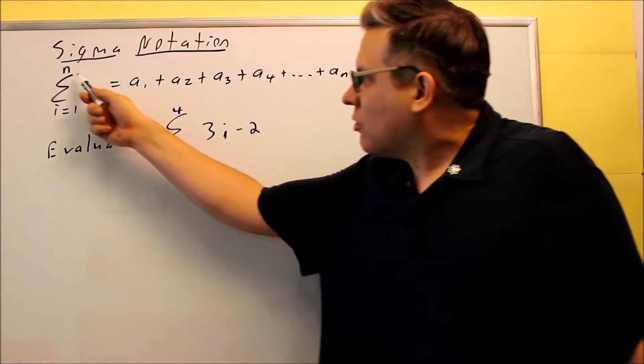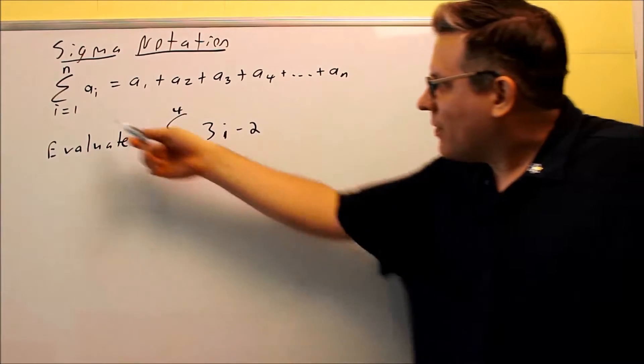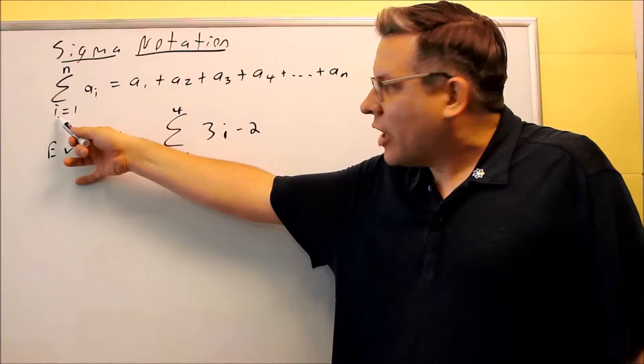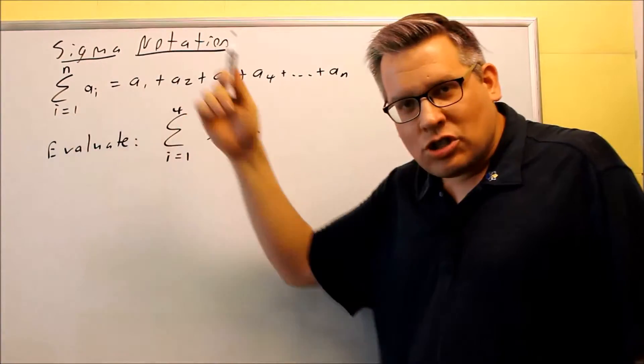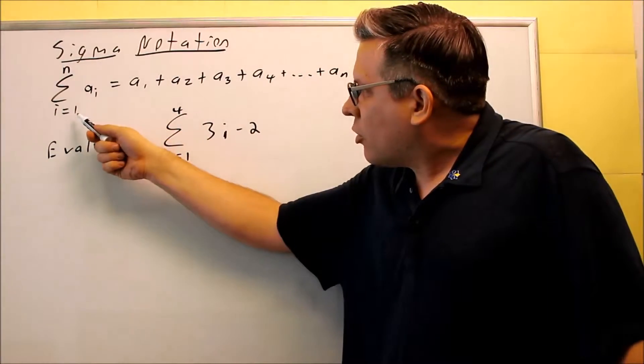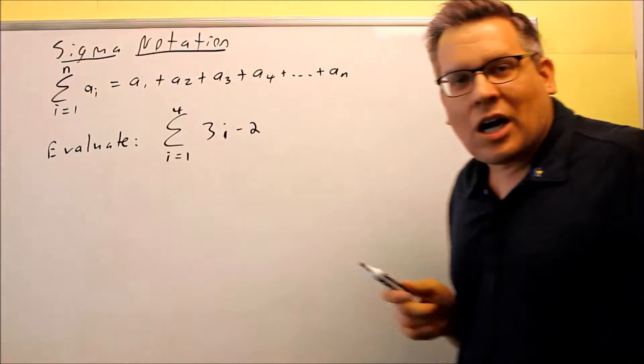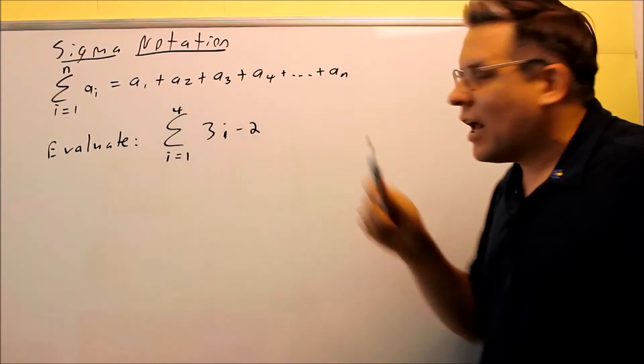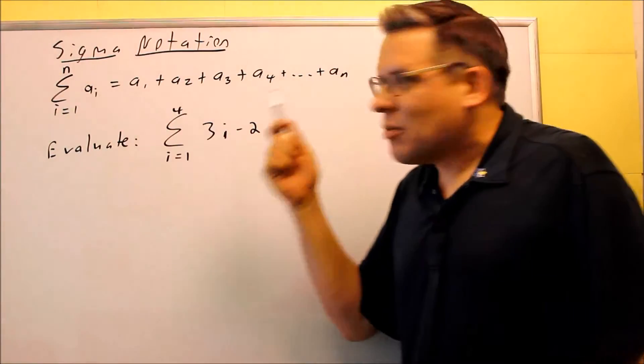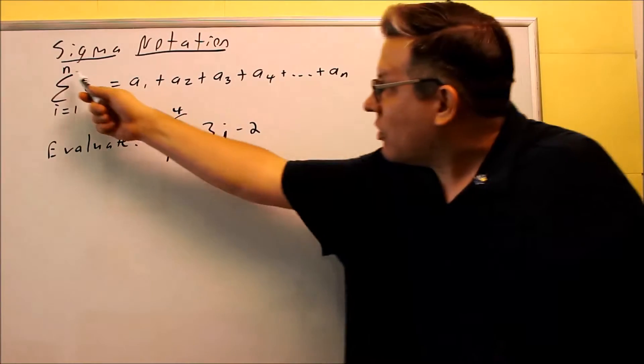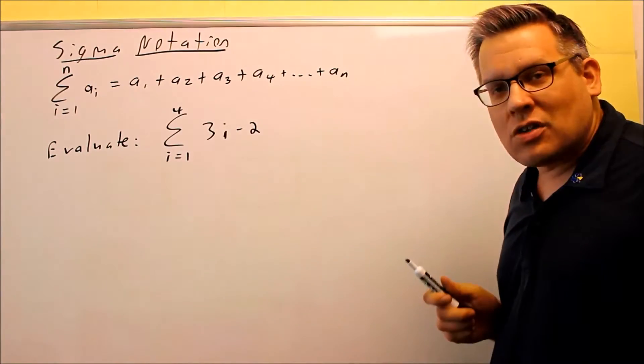So here's the symbol, kind of looks like a giant letter E. The letter down below, that could change. It could be i, it could be j. We start with one number and it goes up to another number at the top, and that tells you how many of these you're adding together. The summation here, that's called summation notation. That means you're adding a bunch of things together.